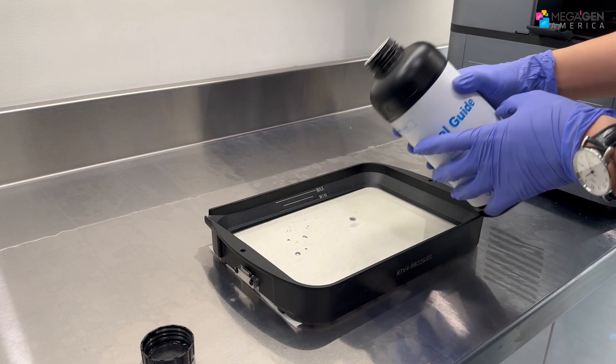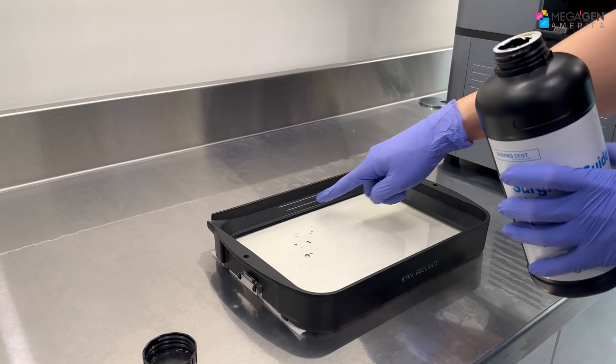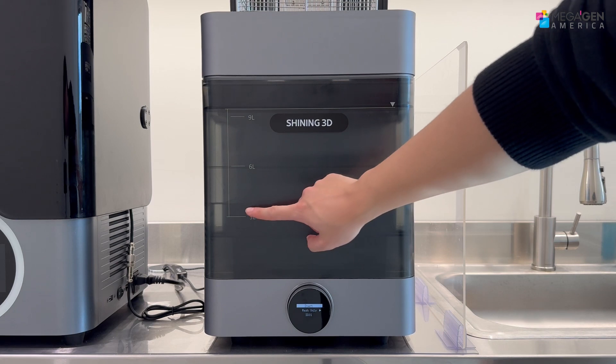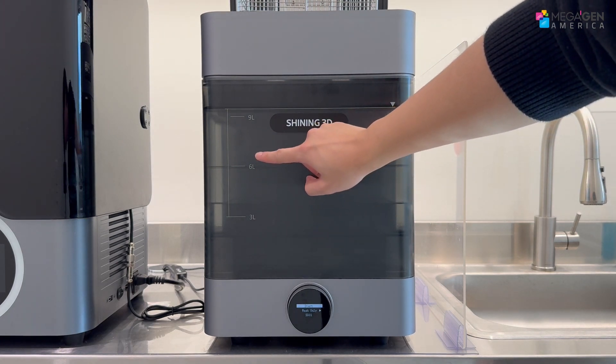Before we start, please make sure the surgical guide resin is poured into the resin tank. For the washer, add three to six liters of alcohol.